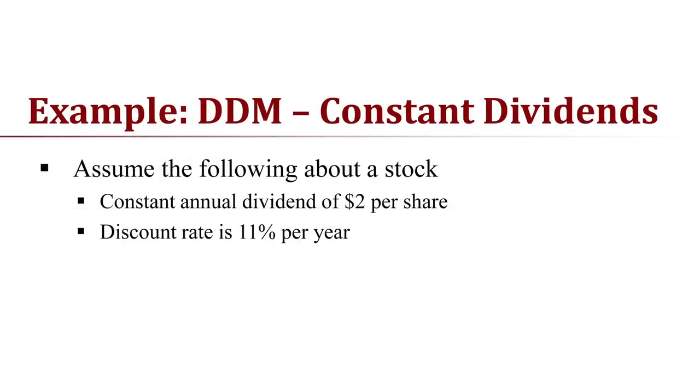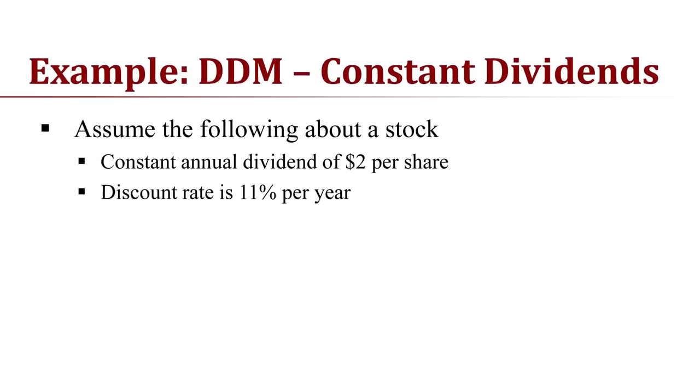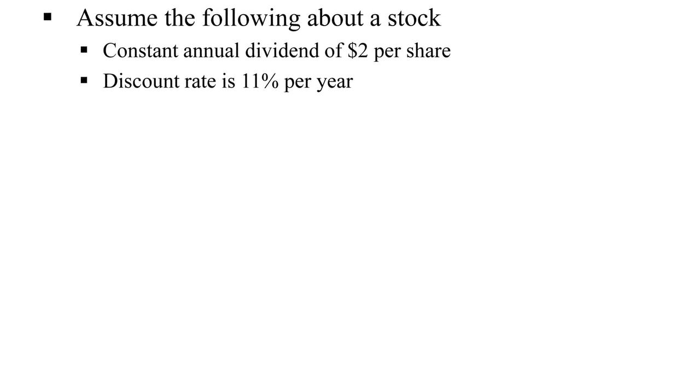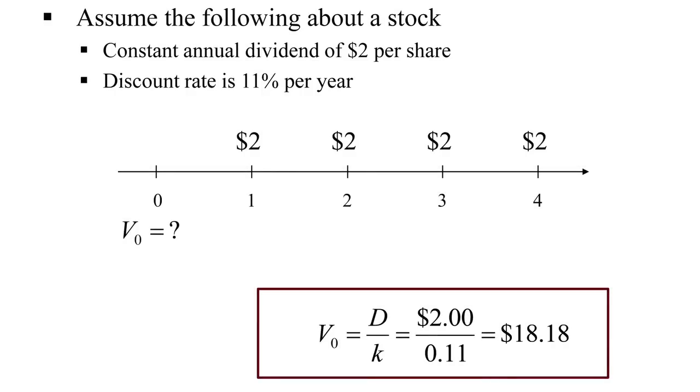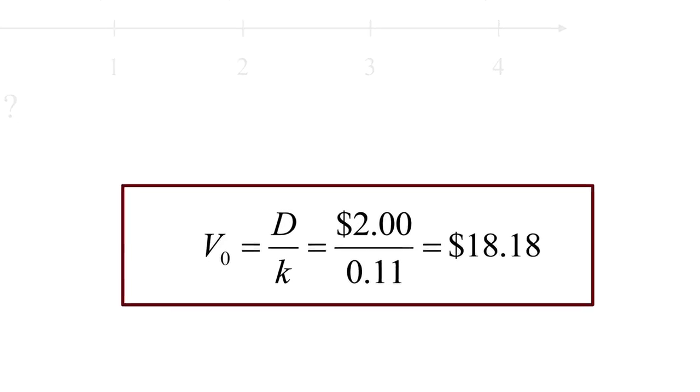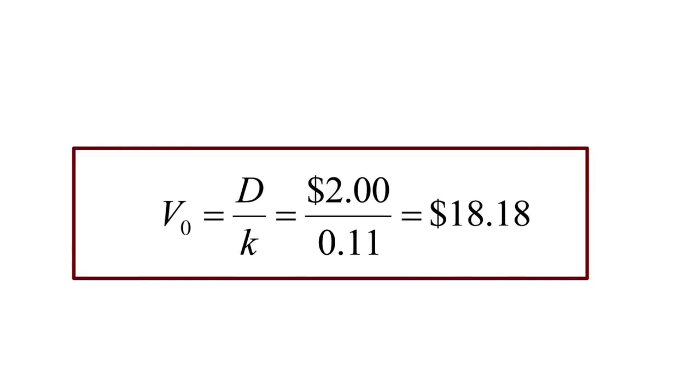Before moving on, let's do a quick numerical example of this. Suppose we have a stock that pays a constant dividend of $2 per share every year, and that we require a discount rate of 11% on this stock. Calculation of the value is very simple by applying that perpetuity formula. The value is just $2 divided by the 11% discount rate, or $18.18.